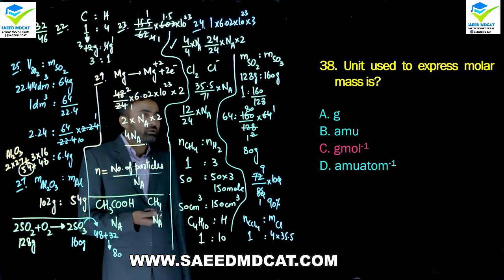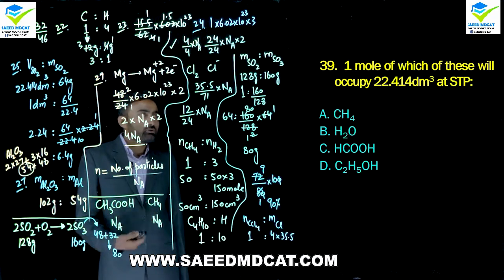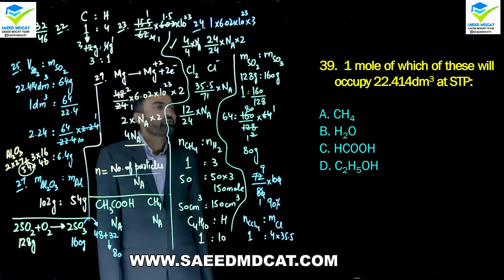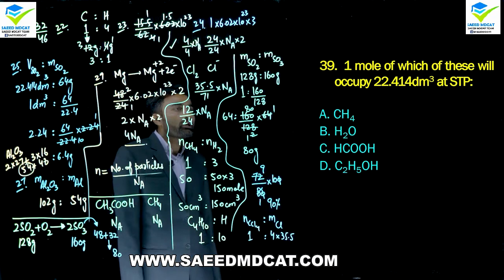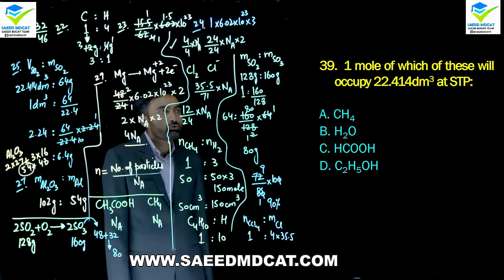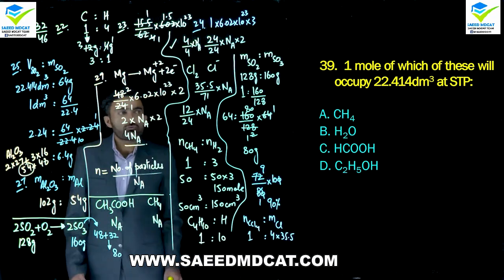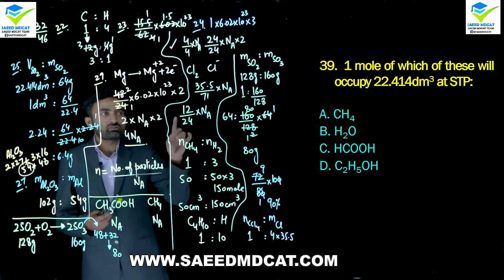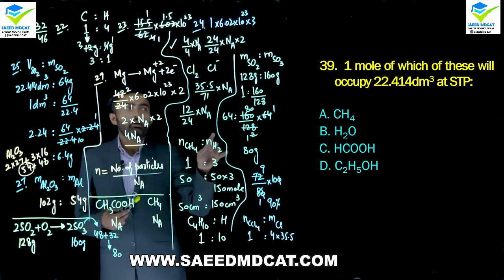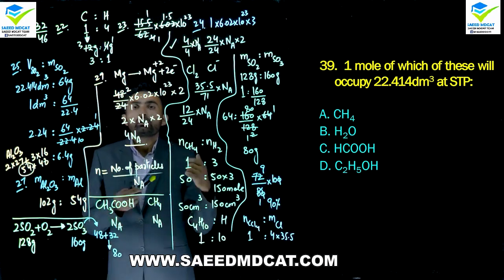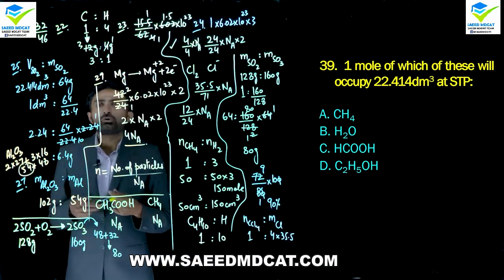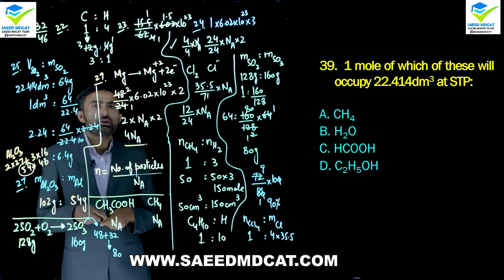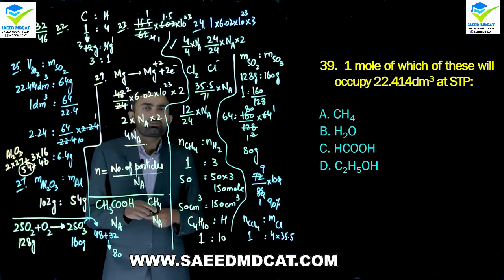Question 38: Unit used to express molar mass. Molar mass is expressed in grams per mole (g/mol). Charlie option is correct. Easy question.